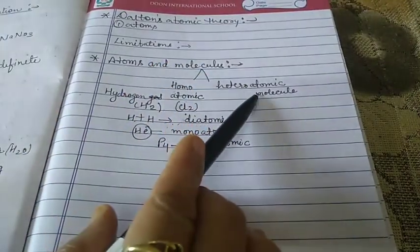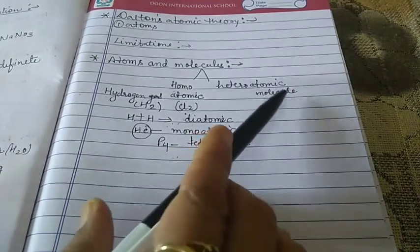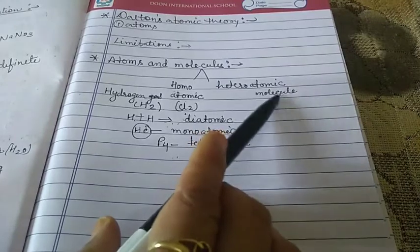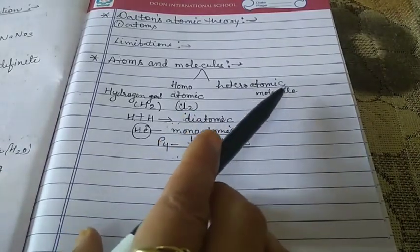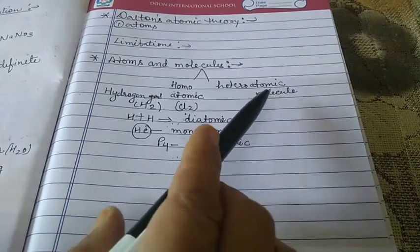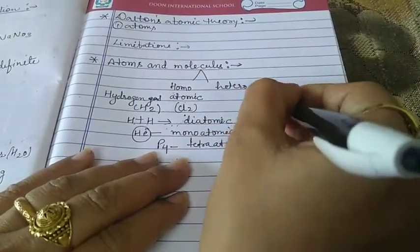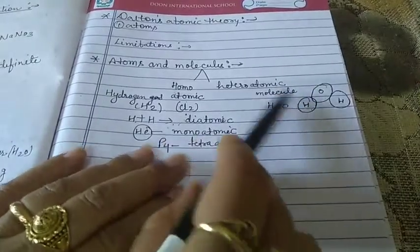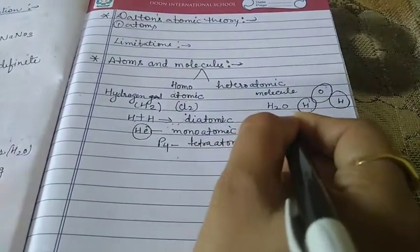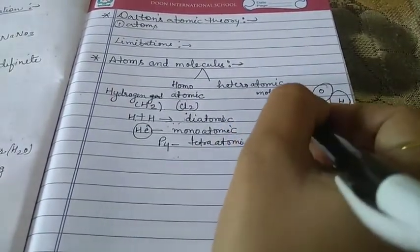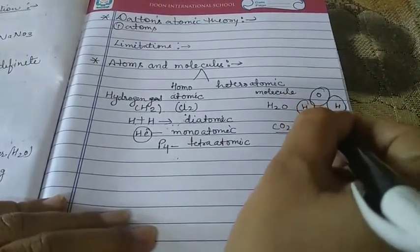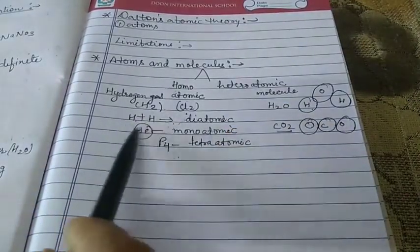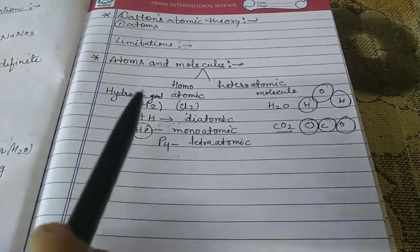Heteroatomic molecules are made up of atoms of different elements — they are formed by the combination of atoms of different elements. For example, H2O is a heteroatomic molecule consisting of hydrogen and oxygen. CO2 is also a heteroatomic molecule consisting of carbon and oxygen. These are heteroatomic molecules, whereas when there are atoms of the same element, these are known as homoatomic molecules.